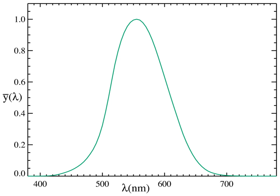Luminous efficacy is a measure of how well a light source produces visible light. It is the ratio of luminous flux to power, measured in lumens per watt in the International System of Units.